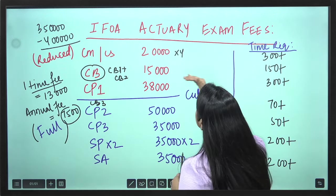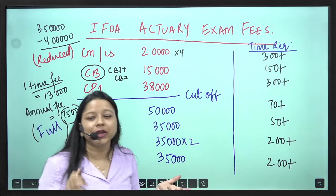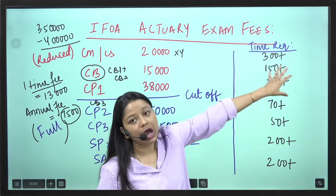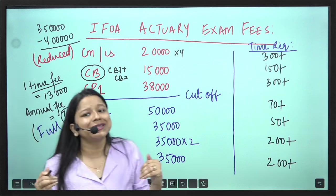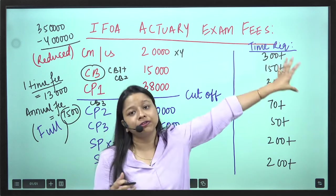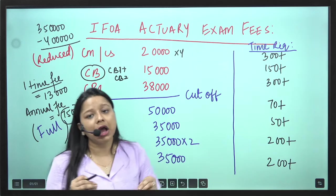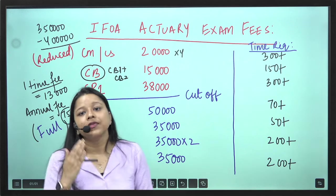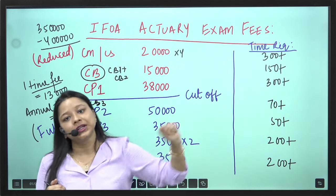Now let us quickly also see the time requirements for each of these papers. So for CM-CS papers, we say generally it takes around 300 plus hours. Now for CS-1, it can be slightly less. For CS-2, it can be slightly higher. But approximately you have to give 300 plus hours of study if you are taking classes, then it is inclusive of classes.